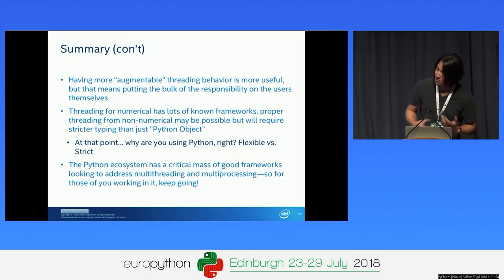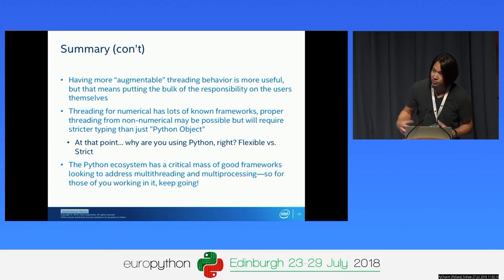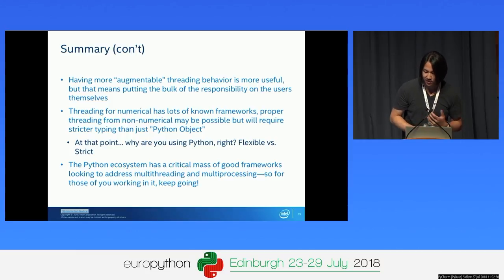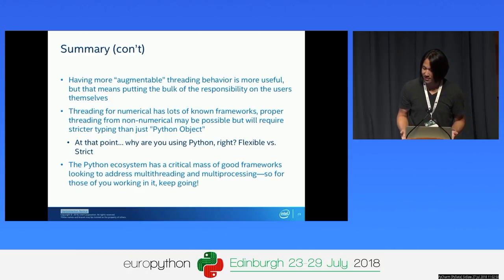Augmenting the threading behavior seems to be the more useful approach based on the experiments we've run. Putting the bulk of responsibility on users means that if you're a framework designer, how you choose to do your threading is really your choice—a relatively heavy responsibility. Threading for numerical work has many known frameworks. If you try to remove the GIL or do anything similar, you're going to be removing the ability to use just a Python object and will need stricter typing—which then poses the question of why you're actually using Python in that instance.